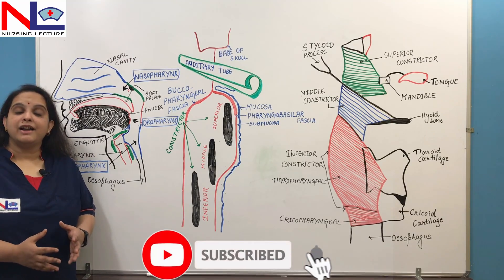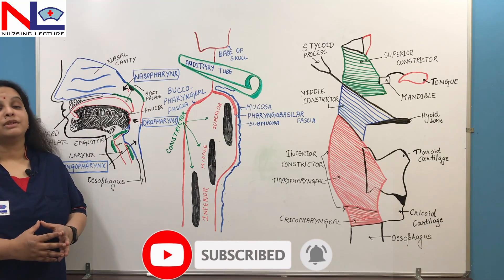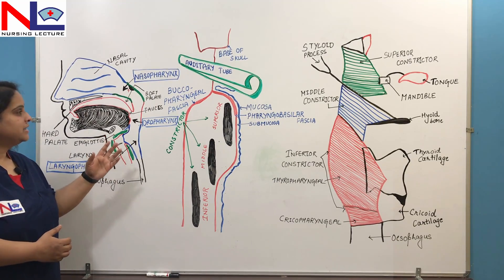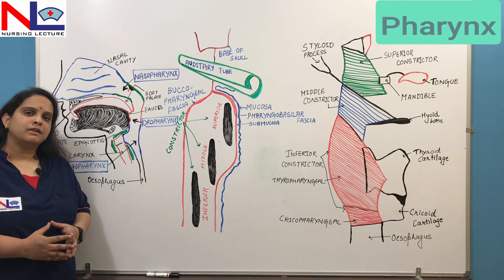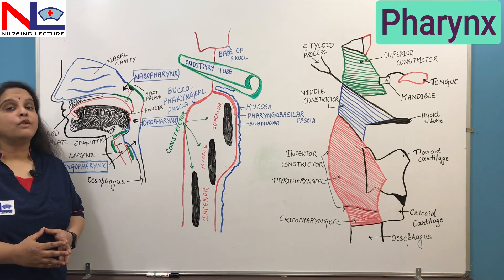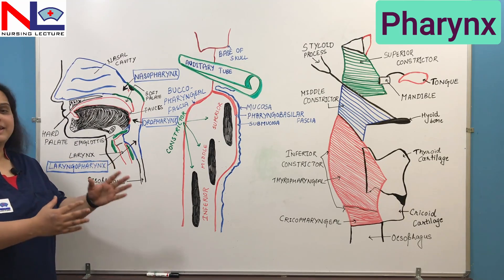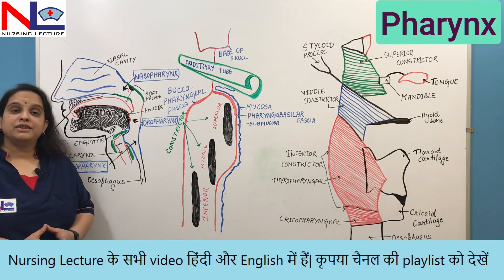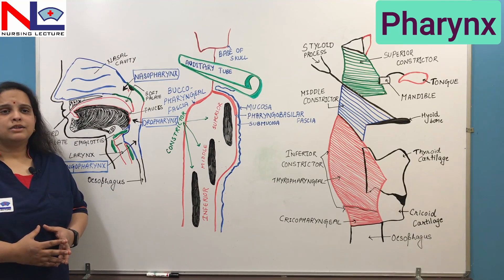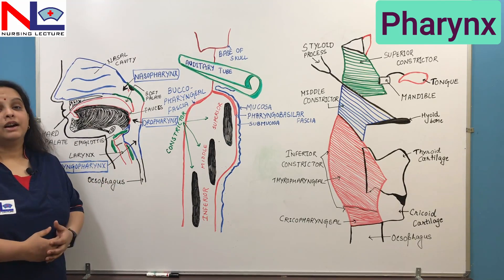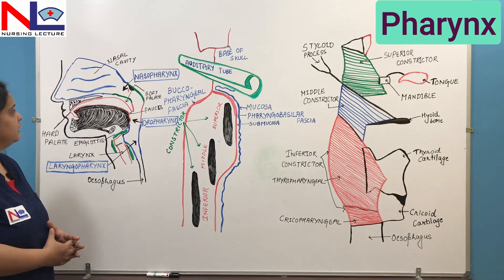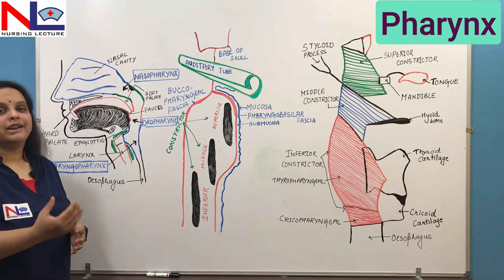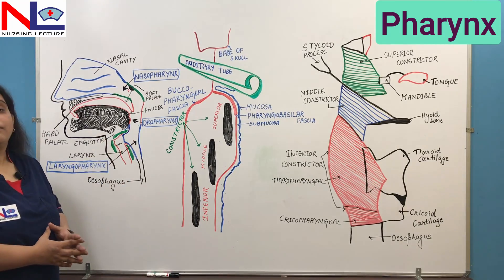Hello everyone, today in this lecture I'm going to discuss about the organ that forms the part of the digestive system. I'm talking about the pharynx. It is also forming the part of the respiratory system as well. I had already made various videos of the digestive system, so you can go through all of those for proper connectivity. In this lecture I'm going to deal with its various anatomical regions, its boundaries, and the wall of pharynx.